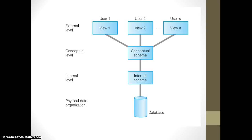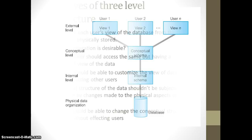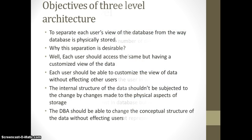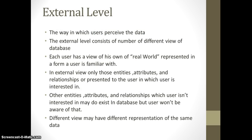User one has its own view, user two has his own view, and user three has his own view. Below the external level we have the conceptual level, and below the conceptual level we have the internal level. After understanding all three levels, we'll come back to this diagram. The external level is the way in which a user perceives the data.